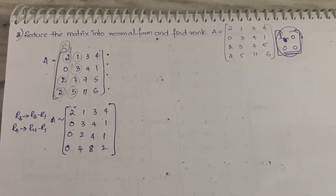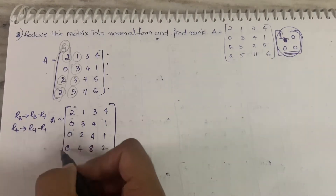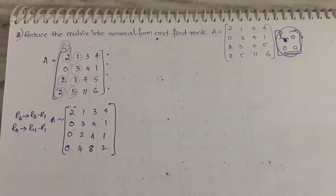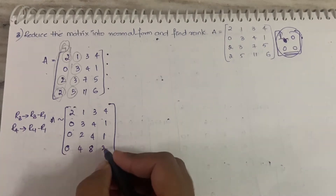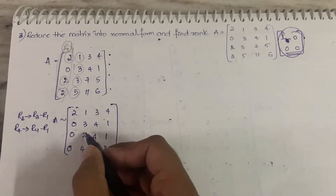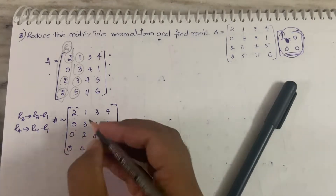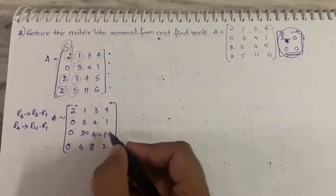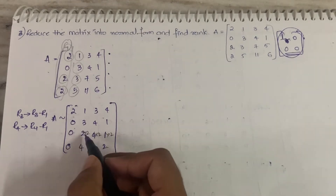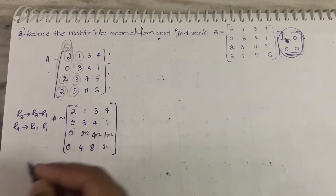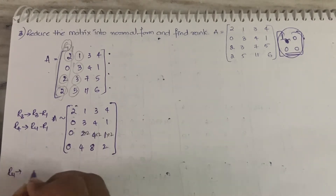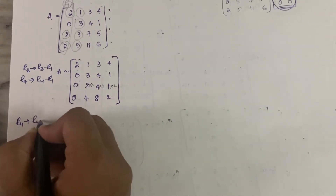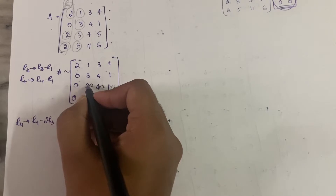Now we got all first-column elements in rows 3 and 4 as zero. Our next target — notice that if you multiply row 3 by 2 you get 0, 4, 8, 2, which matches row 4. So you can do R4 becomes R4 minus 2·R3.